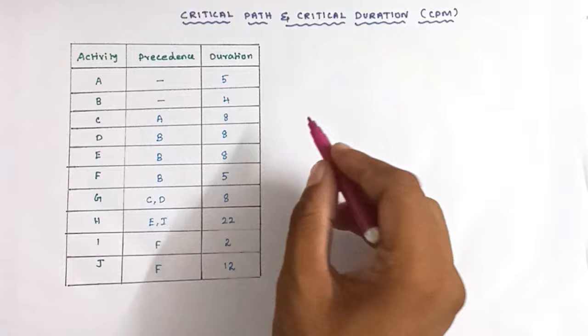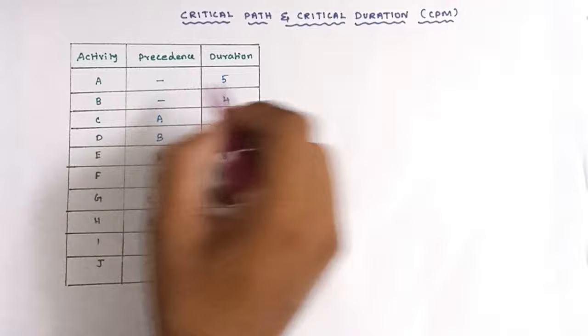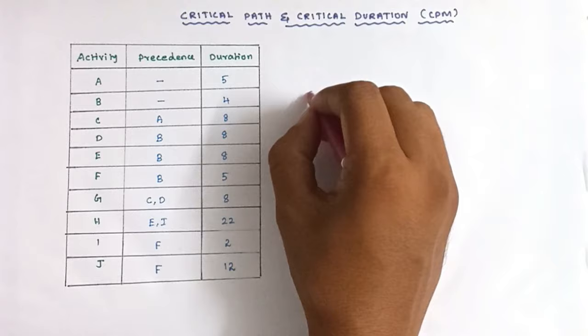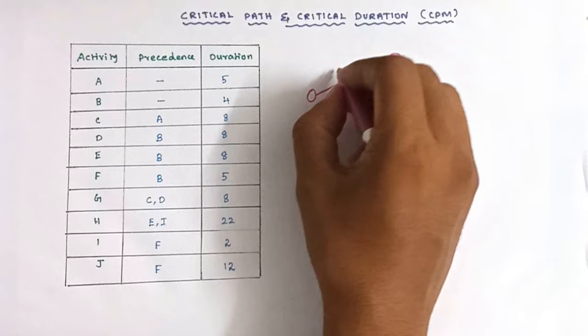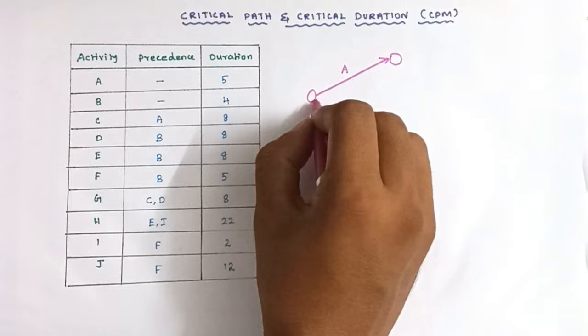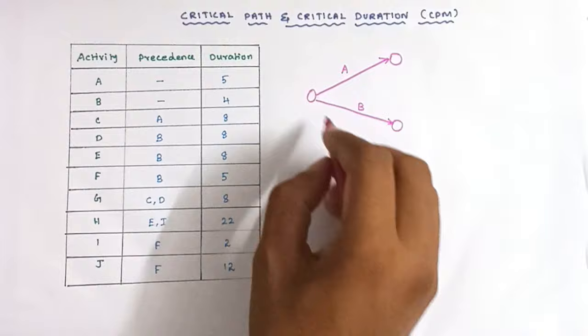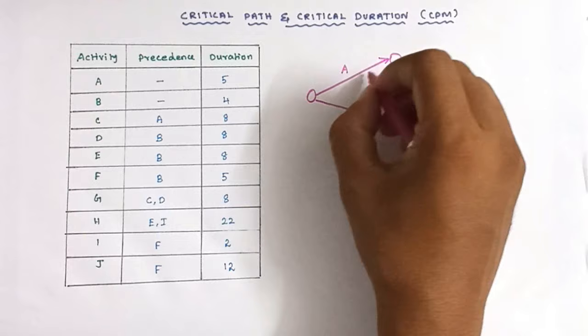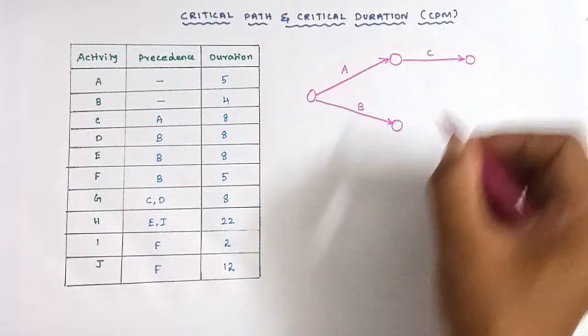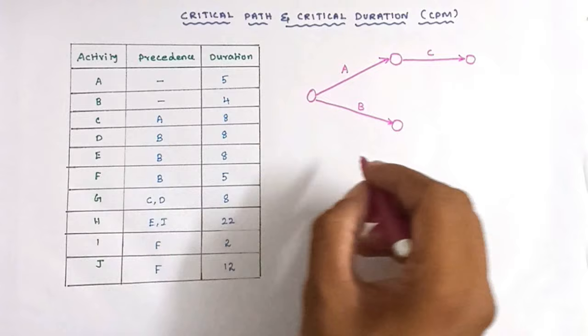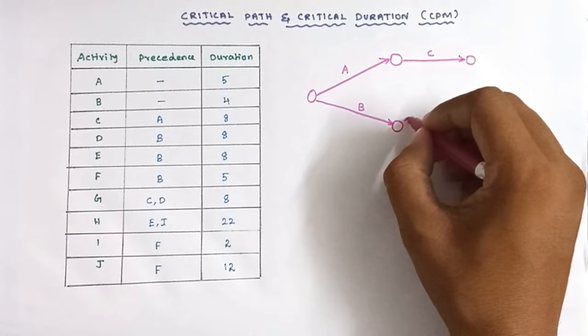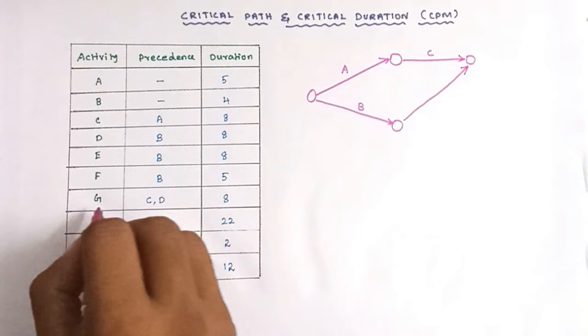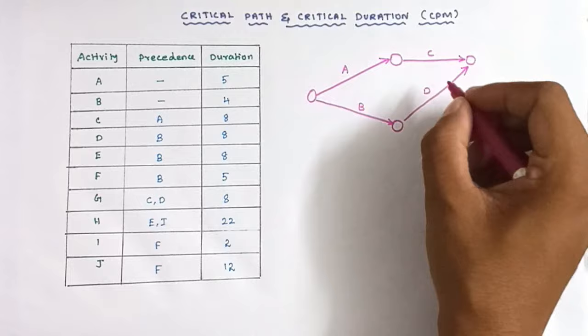For A and B there is no precedent relationship, so we can draw A and B first. Activity A has no precedent activity. Activity B also has no precedent activity. Next we draw C — after completion of A, activity C will start. Activity D will start after the completion of B. We can draw D here because C and D are in the precedence relationship for G.